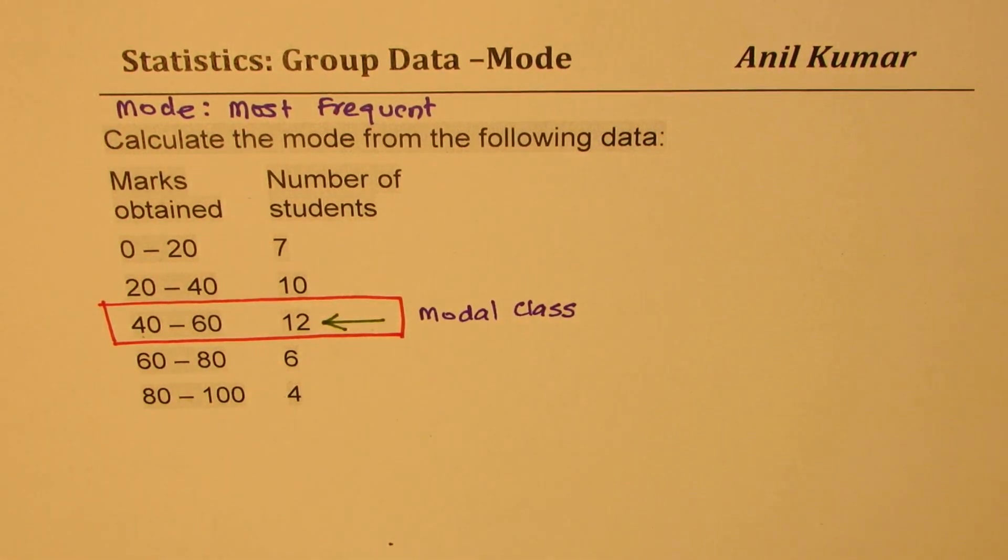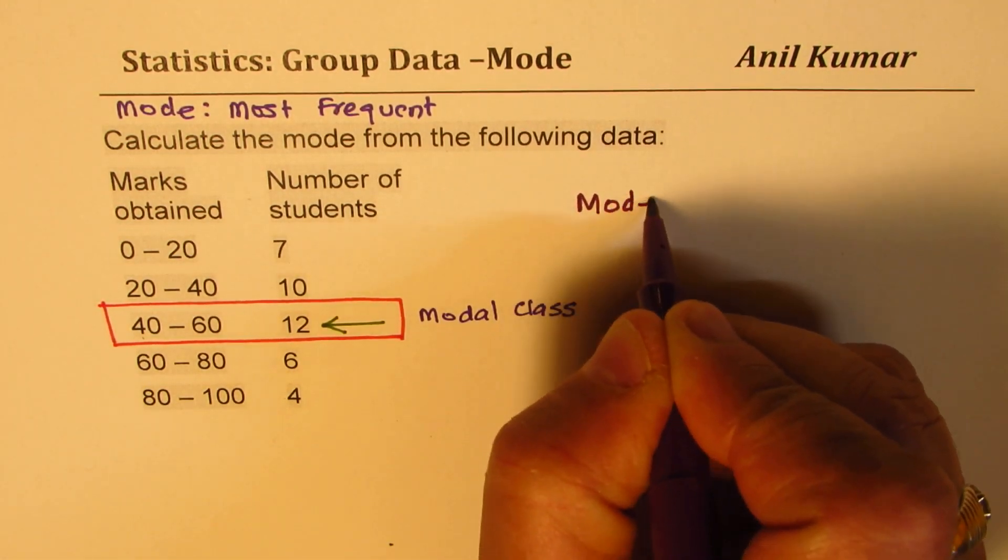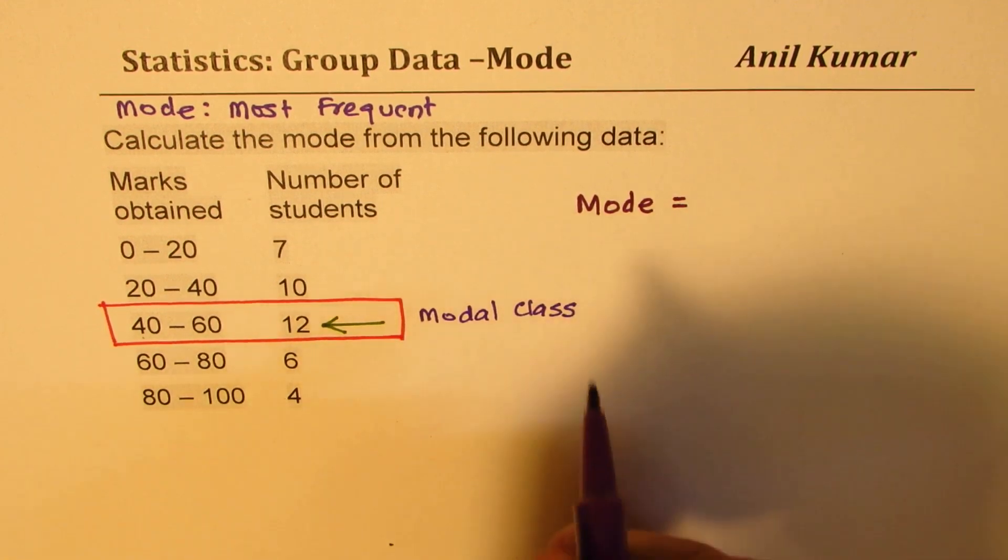Now from here, using the formula, we will find the mode. The formula for mode is like this. We know now that the mode, the number of marks which most students have got is somewhere in between 40 to 60.